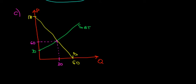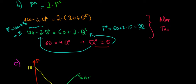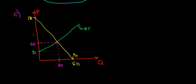We also need the supply after the tax. The supply after the tax is 60 plus 2 times quantity supplied. The price intercept will be 60 and the slope will be positive 2, meaning it's a bit more steep — more vertical — than the supply before the tax.